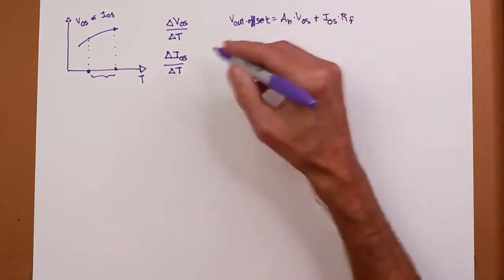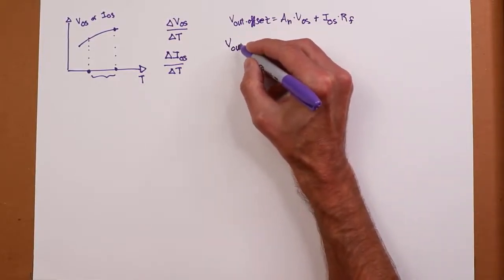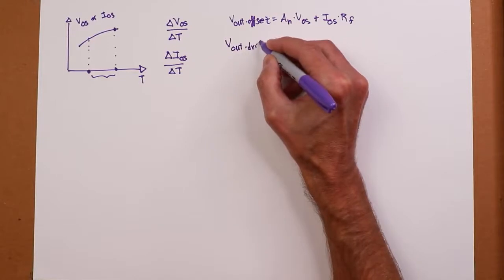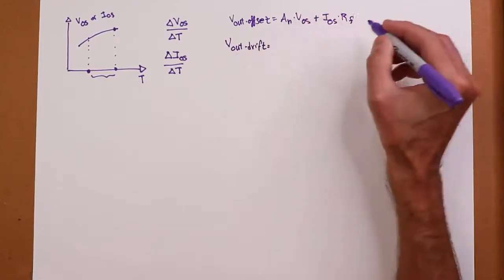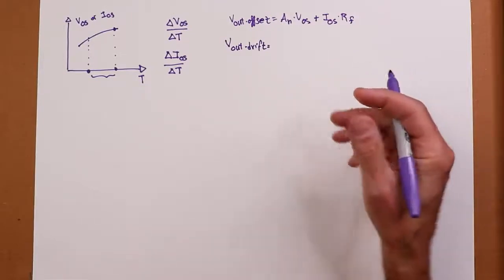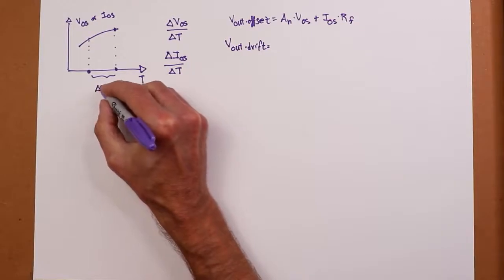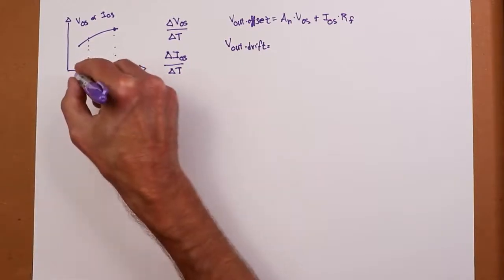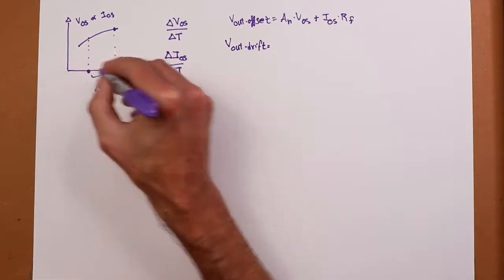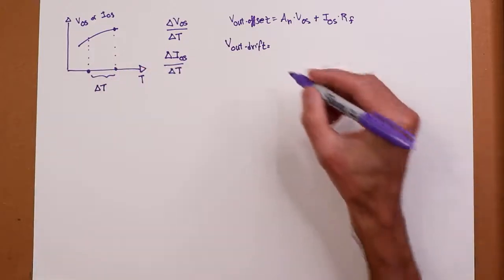Well, we basically in our new equation, our output drift, we replaced the V_OS and I_OS terms with these temperature-dependent terms and what our change in temperature is. In other words, what our delta T is. Where did I null this thing, or where did I do the initial measurement, and where is it now? What's the new temperature?